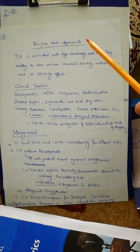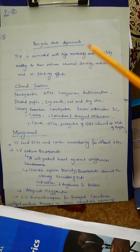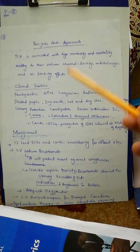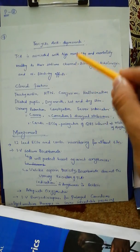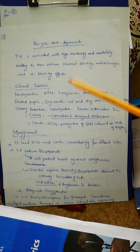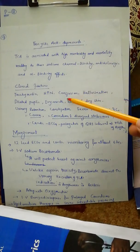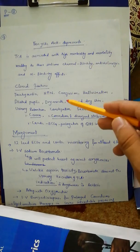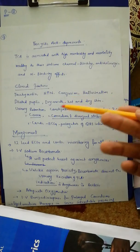The second specific poisoning is tricyclic antidepressant (TCA) poisoning, which is associated with high morbidity and mortality due to sodium channel blocking effect, anticholinergic effect, and alpha-blocking effect. Clinical features include tachycardia, hypertension, confusion, hallucination, dilated pupils, dry mouth, hot and dry skin, and urinary retention and constipation — all anticholinergic effects.